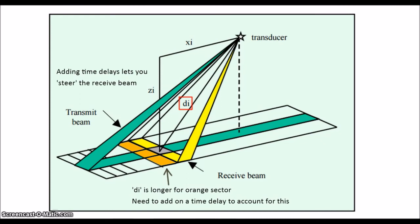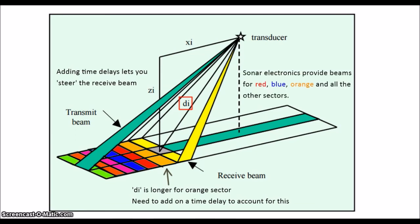But remember, the receiver array is composed of many piezoelectric elements. If we add multiple receiver circuits or channels, we can use different parts of that array and have them all listen at the same time, trying to cover the area of the seafloor insonified by the transmitter. So now we have multiple steerable beams that we can use to form a wide angle of reception, known as the swath or footprint.